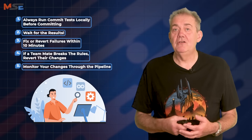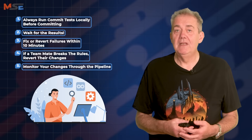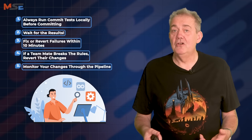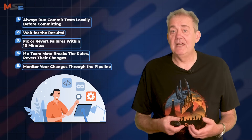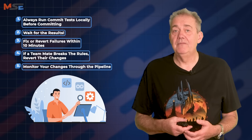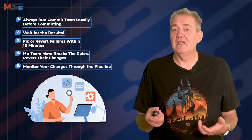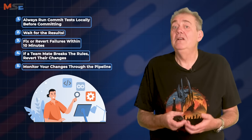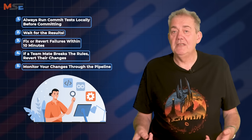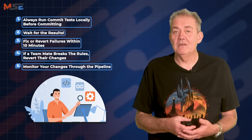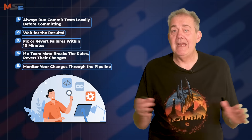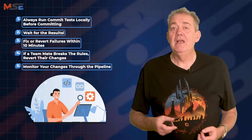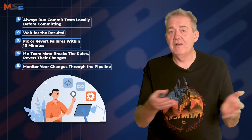Rule five: monitor your changes through the pipeline. Even after the commit stage passes, your job isn't done. Keep an eye on your release candidate as it transits the pipeline. Is it passing acceptance tests, performance tests and security checks? Your changes don't just need to compile — they need to be production ready. That's what the deployment pipeline is looking to establish. So if your commit breaks any of these tests anywhere in the pipeline, it's still your problem and your responsibility to keep the pipeline flowing.